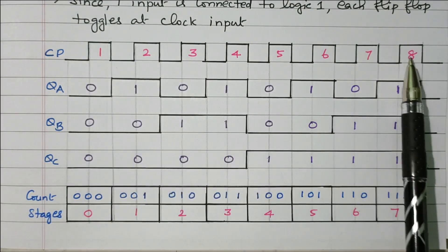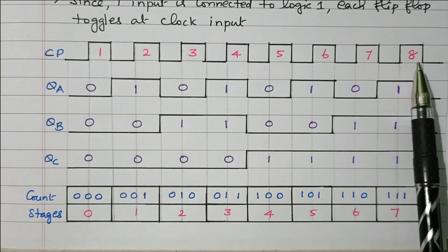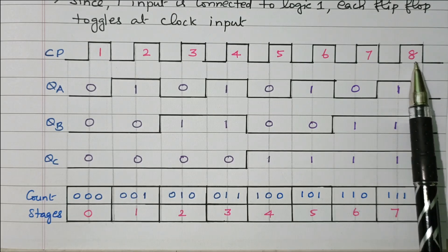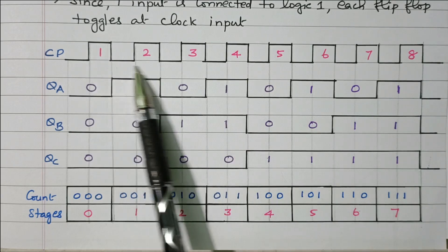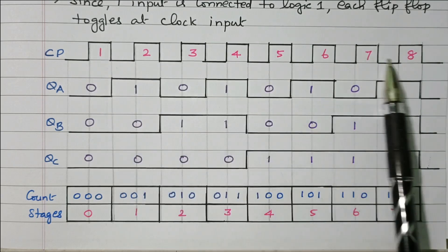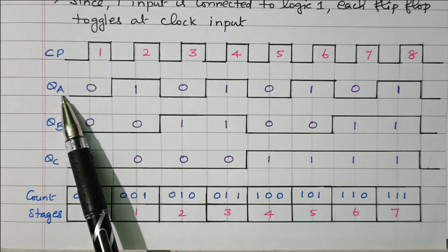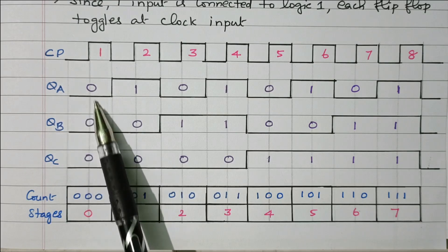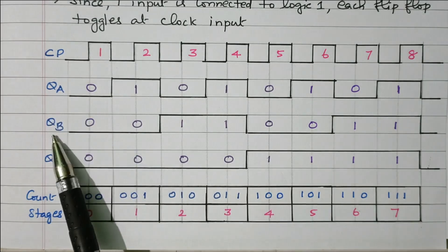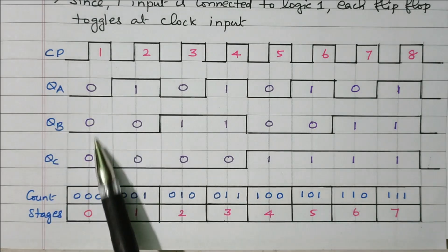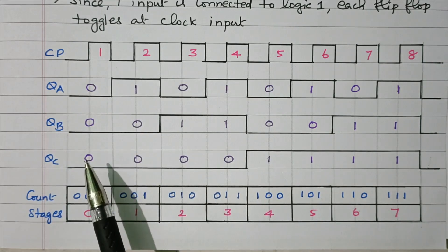This 3-bit asynchronous counter has 2 to the power 3 = 8 states available. We refer to 8 clock pulses. The outputs are QA, QB, and QC. Initially all are 0 — all flip-flops are reset to 0.